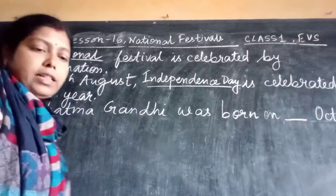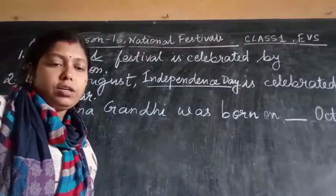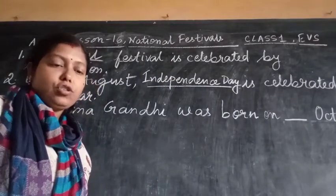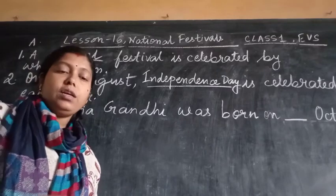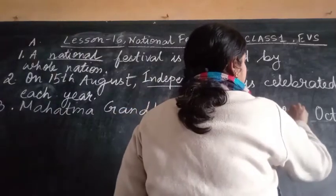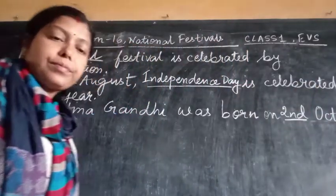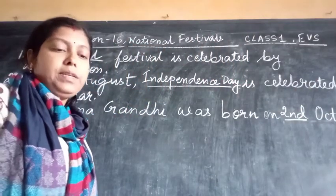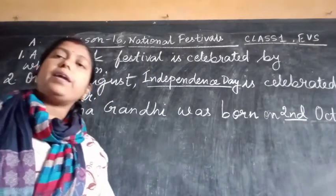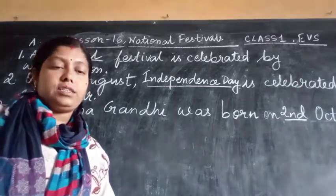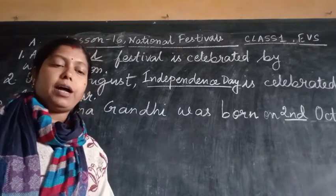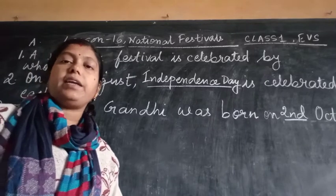Number three — Mahatma Gandhi was born on blank October: 10th October, 2nd October, or 1st October. Mahatma Gandhi was born on 2nd October. Once again: a national festival is celebrated by whole nation; on 15th August, Independence Day is celebrated each year; Mahatma Gandhi was born on 2nd October.